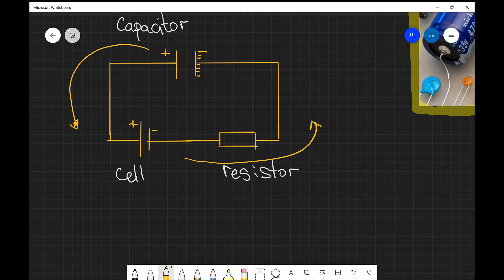Once the capacitor has reached the voltage of the charging supply, so let's say that our cell is 5 volts, once the capacitor has reached 5 volts, the charging is complete.